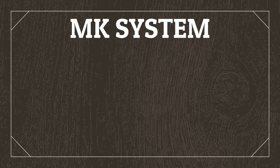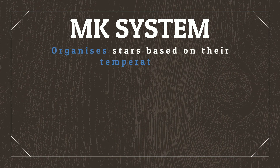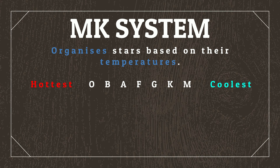Stars are classified using the Morgan-Keenan, or MK, system, which organises them based on their temperatures. Stars are graded using the letters O, B, A, F, G, K, and M, starting from O being the hottest to M being the coolest. Each letter class is further divided with a 0 to 9 numerical system, with 0 being the hottest and 9 being the coolest.